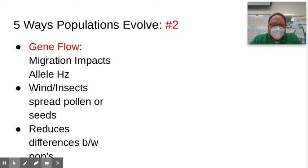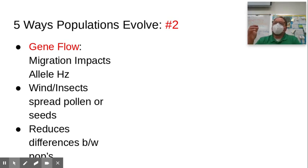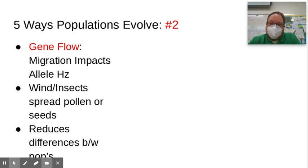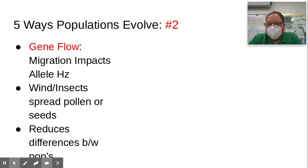Wind can spread pollen from one field to another. Even non-GMO organic raised plants will still have sometimes even three percent of their genome be genes from genetically modified organisms, just because insects and wind can spread pollen from one field to another.